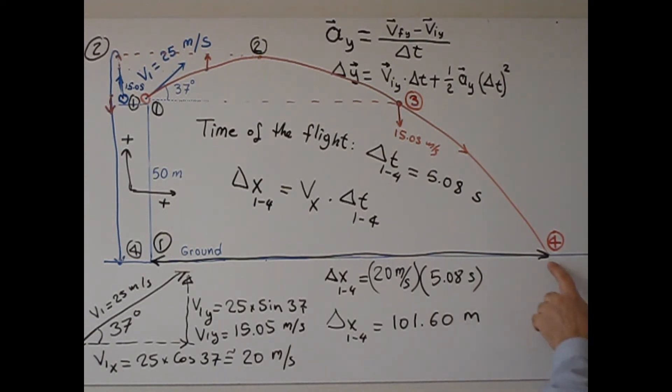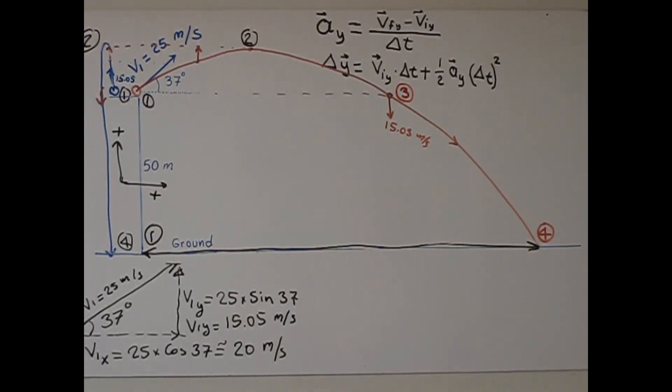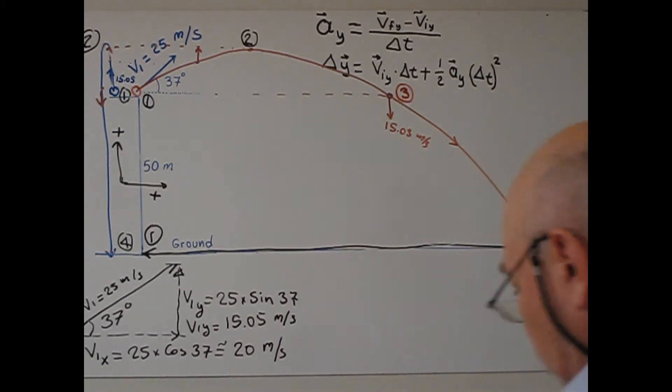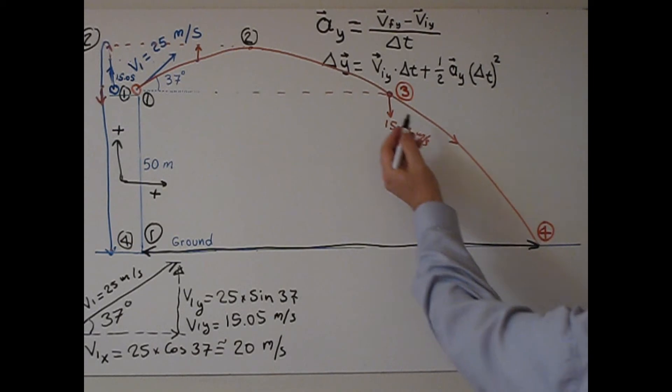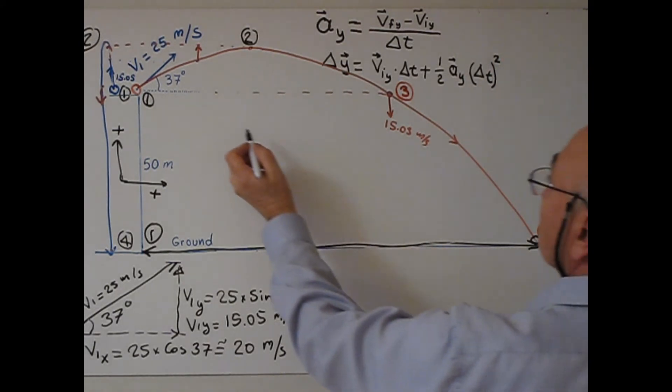So horizontal displacement for the ball from the point I kick the ball to the point the ball hits the ground. The last question: what is the velocity at impact? The ball is going this way, just before it hits the ground, what is the final velocity? We are going to use this formula.